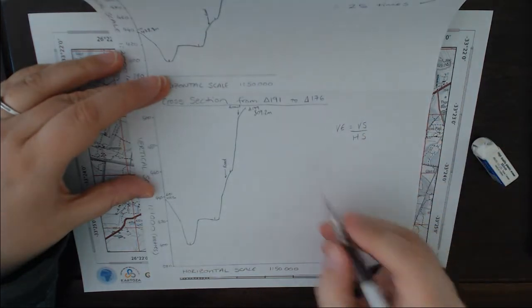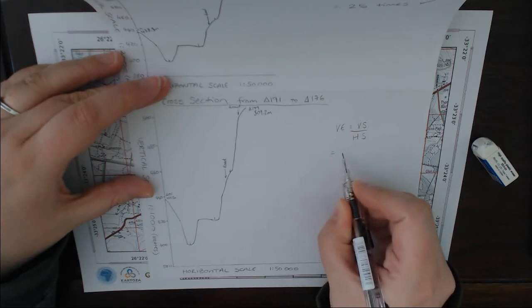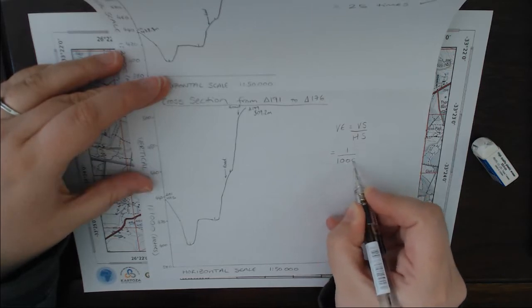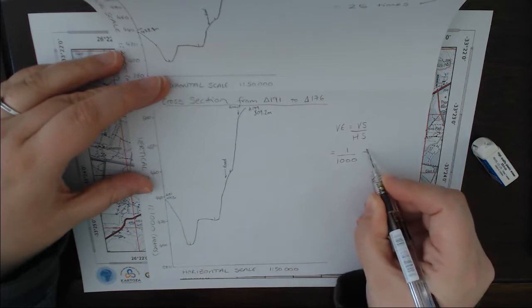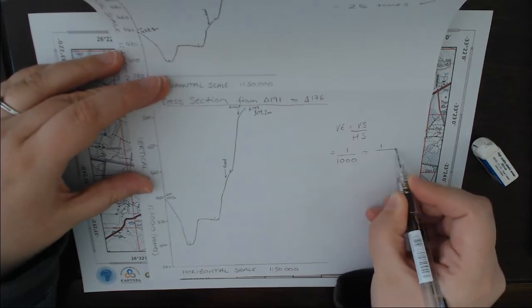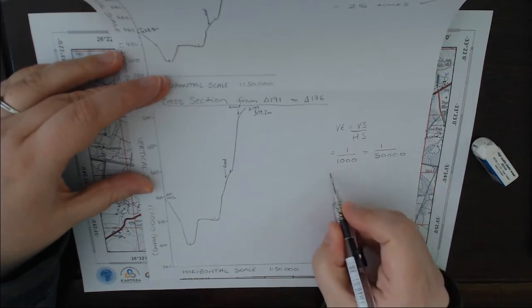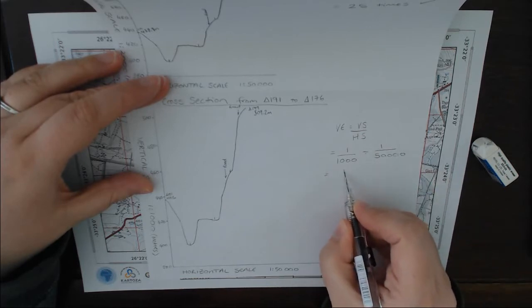This does not change our formula. Vertical exaggeration is vertical scale divided by horizontal scale. So we got 1 is to 1,000 divided by 1 is to 50,000. So there we go.